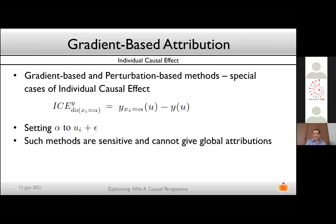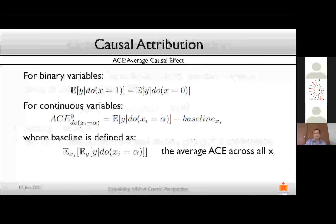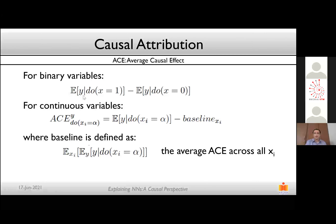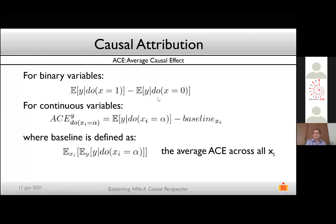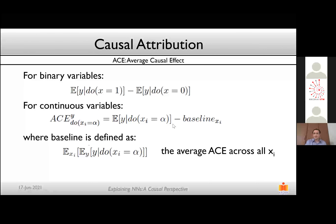Gradient-based methods are sensitive and may not give global attributions. This leads us to defining the average causal effect (ACE), commonly used in causal literature. For binary variables, ACE is the expectation of Y given you intervene and set an attribute to one, minus the expectation of Y given you set it to zero. For continuous variables it's more challenging — ACE is defined as the expectation of Y given the intervention minus some baseline, typically the expected value of Y over all values of Xi.